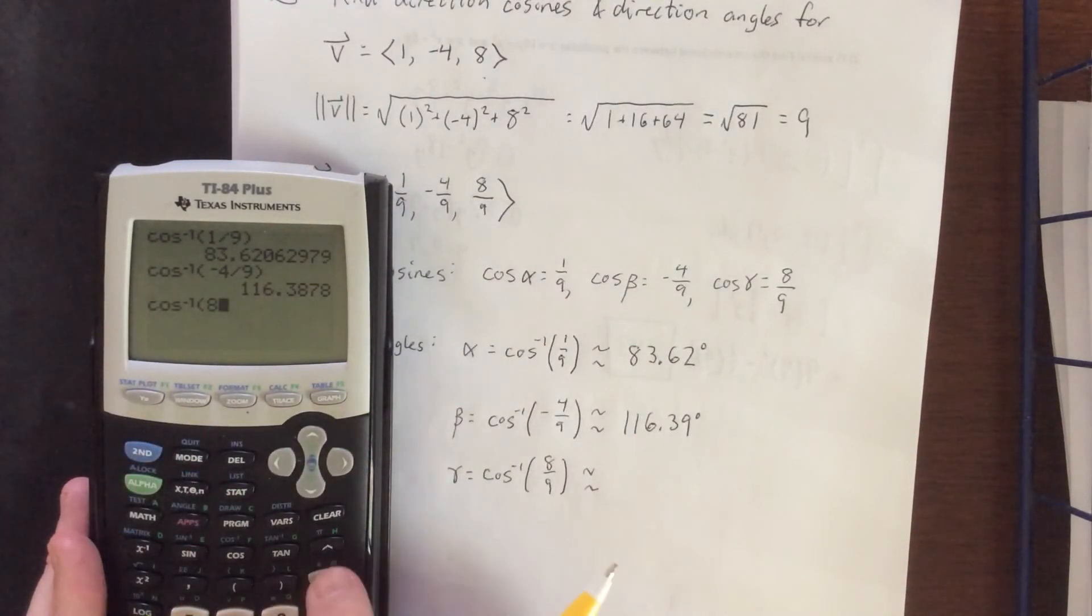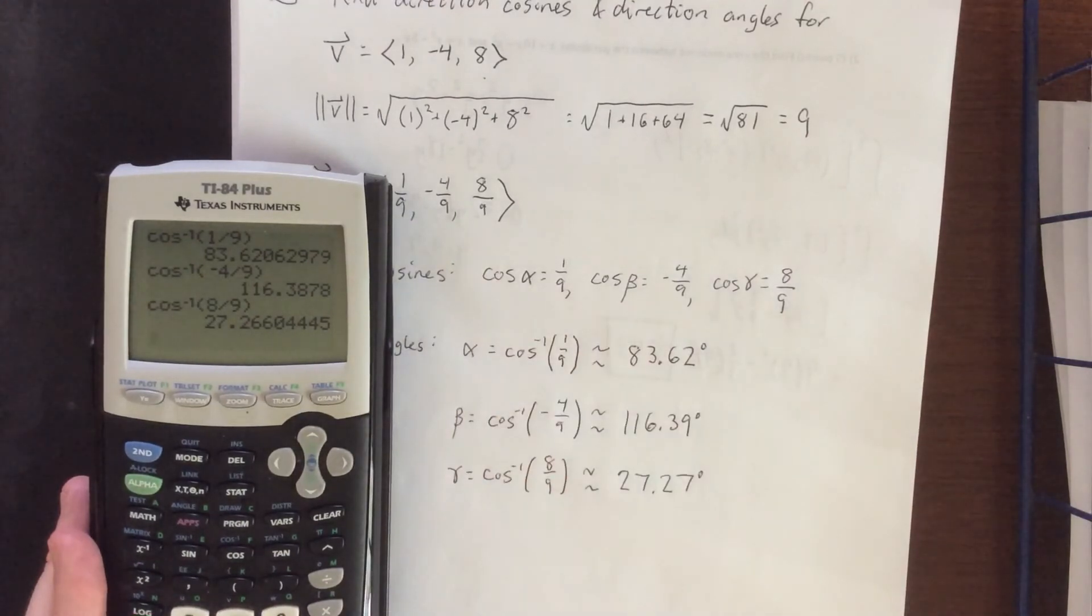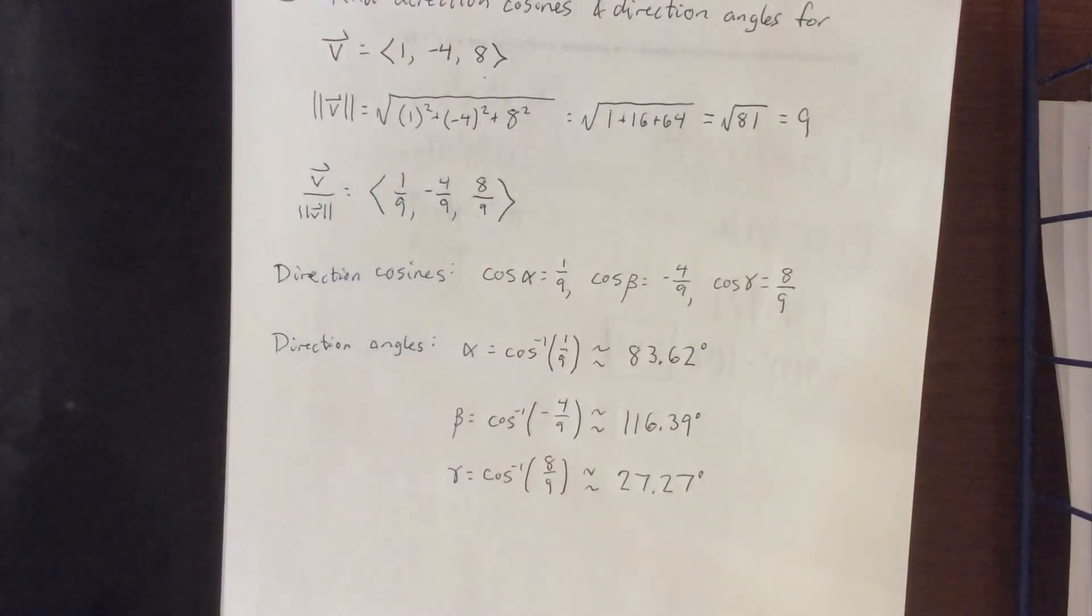And finally, the arc cosine of 8/9, probably pretty acute. That'll be 27.27 degrees, rounding at the second decimal point. So that's how you come up with direction cosines and direction angles for a given vector.